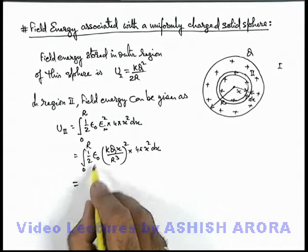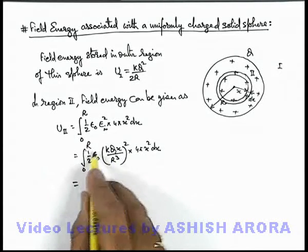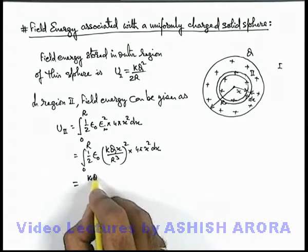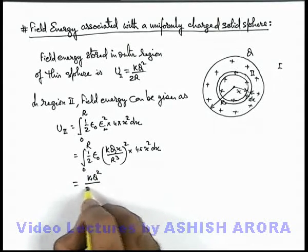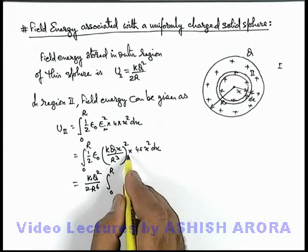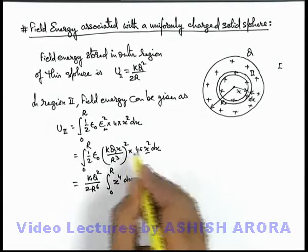here you can see k gets cancelled out with this 4πε₀, so out of the sign of integration we are having the constant as kQ² by twice of R to power 6, integrated from zero to R, and inside the expression we are having x⁴dx because one is this x² other is this x².